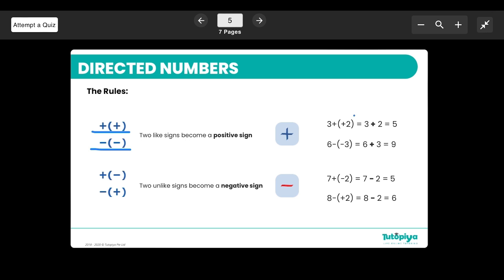For example, 3 plus positive 2 is 5. But at the same time, 6 take away negative 3, because of the two negative signs, turns into a plus which results in 9. It's very important to remember that subtracting a negative number results in a positive number.